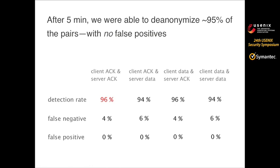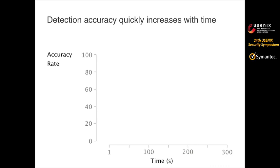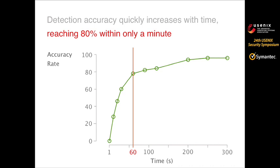The data-versus-data column is equivalent to traditional traffic analysis, which uses only data packets. While the first column uses only ACK versus ACK, which is as effective as any others. The detection accuracy rate quickly increases with time — it reaches about 80% within only a minute and eventually reaches about 95% in five minutes.